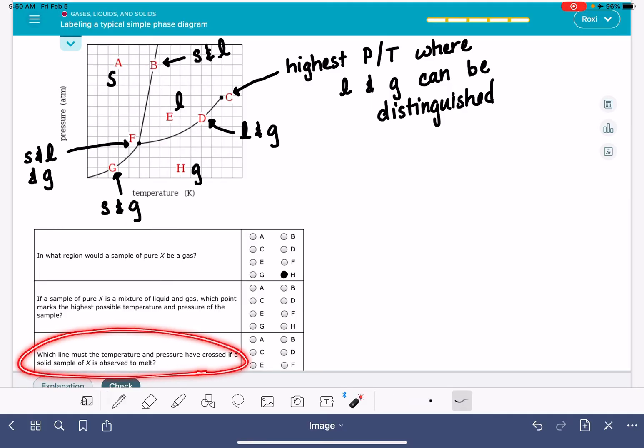And also the last question is pretty straightforward. What line must the temperature and pressure have crossed if a solid sample is observed to melt? Melting is where we're converting from solid to liquid. Solid to liquid is right here, so along line B right there.